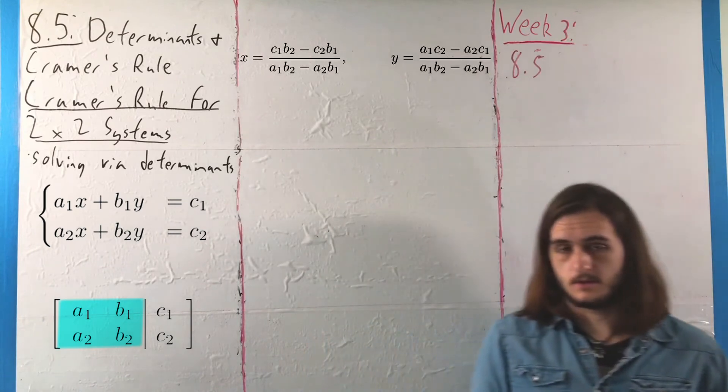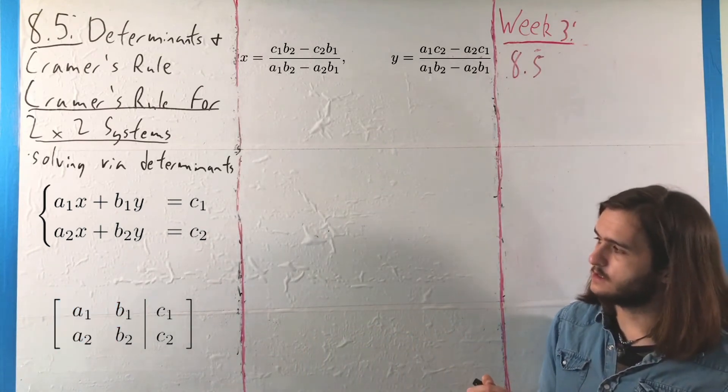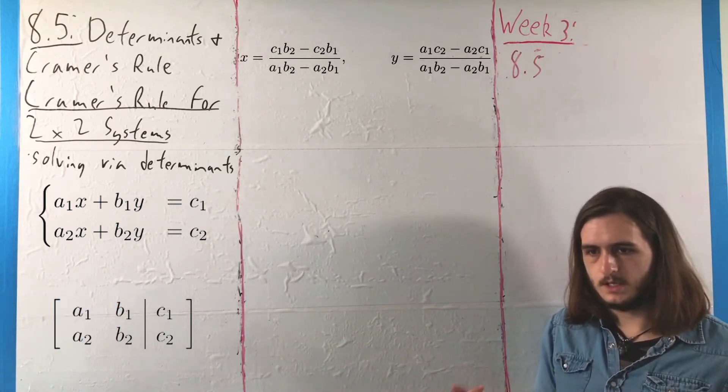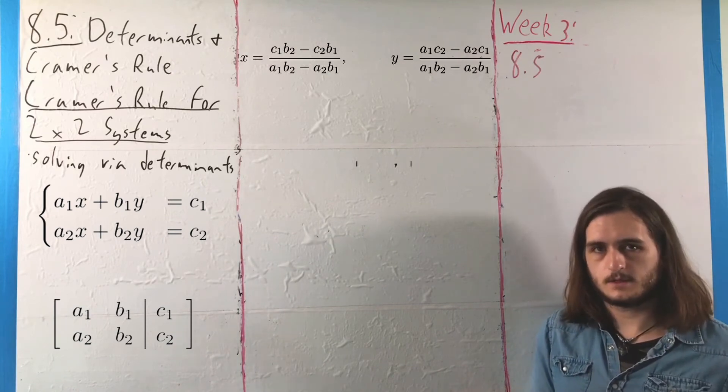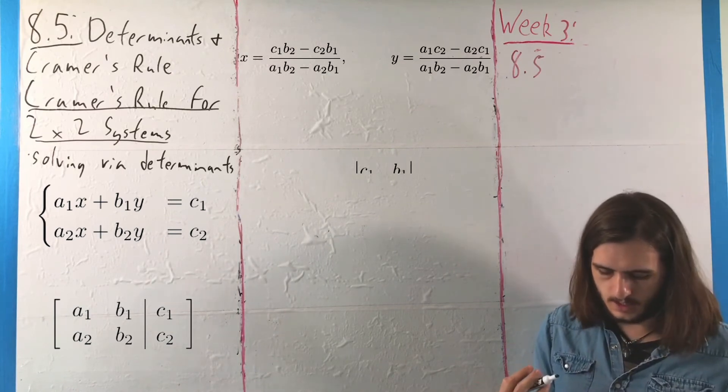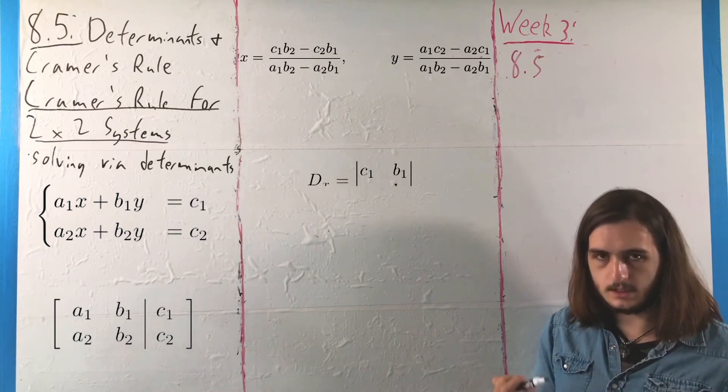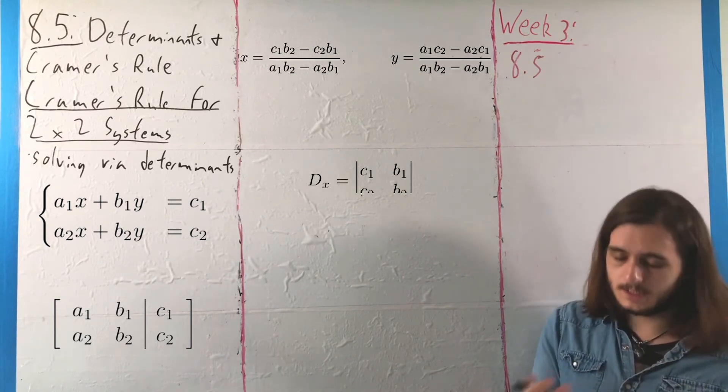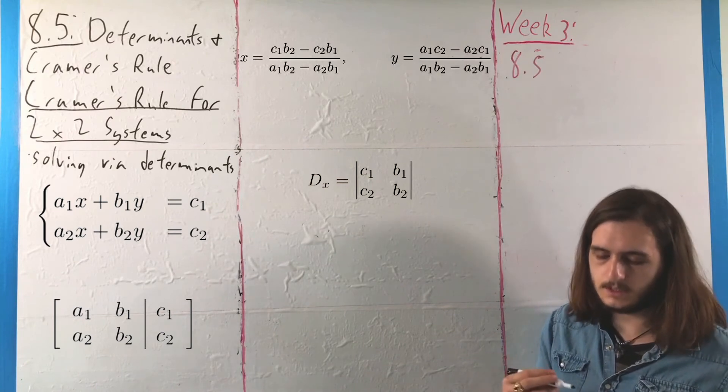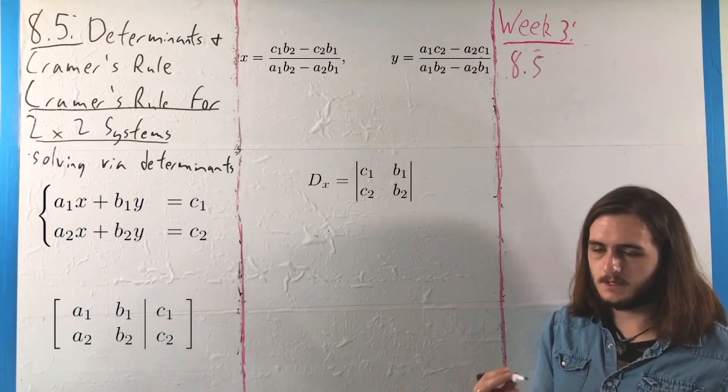And similarly, you can write the numerators of each in terms of determinants, which I'll call DX and DY here. That is, C1B2 minus C2B1 is equal to DX, the determinant of C1C2 and B1B2 as a 2x2 matrix.